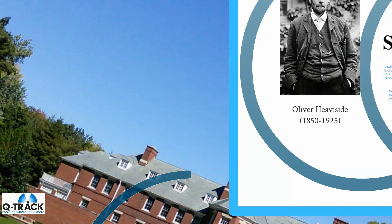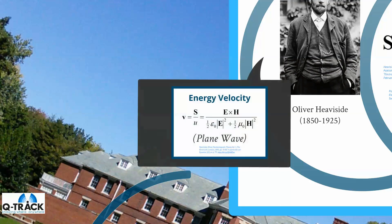Oliver Heaviside was a truly remarkable individual, a self-taught electrical engineer. He not only rewrote Maxwell's equations in their present-day form, but also came up with the idea of energy velocity — proposing that energy moves with a velocity equal to the ratio of the Poynting vector to the local energy density. He only derived this in the context of plane waves, however.